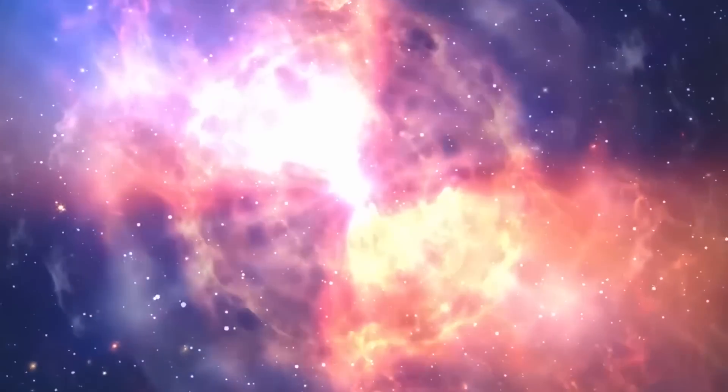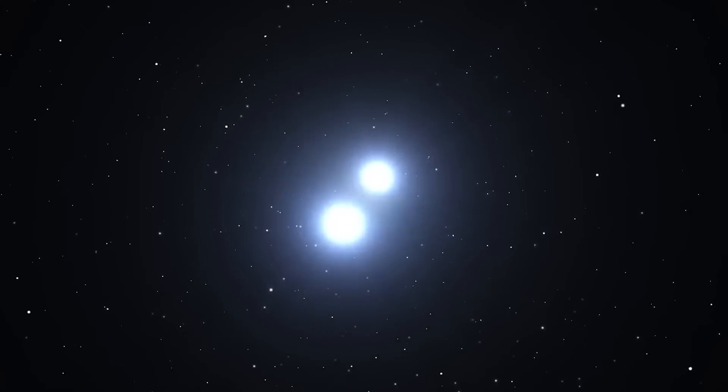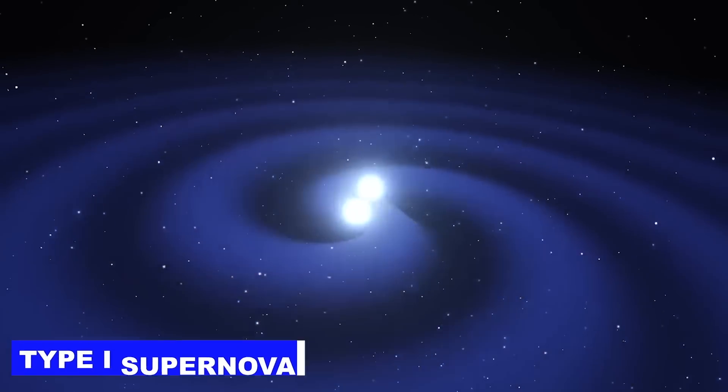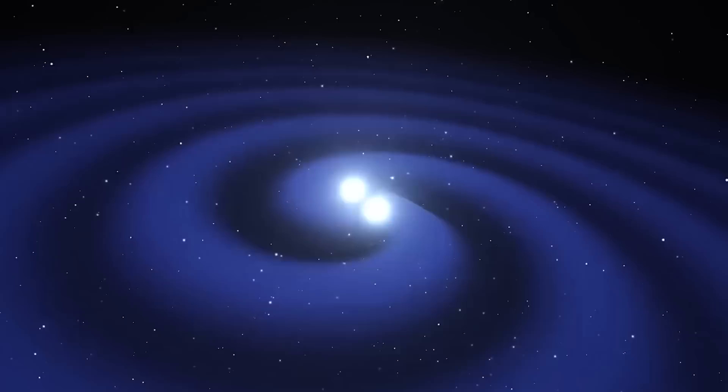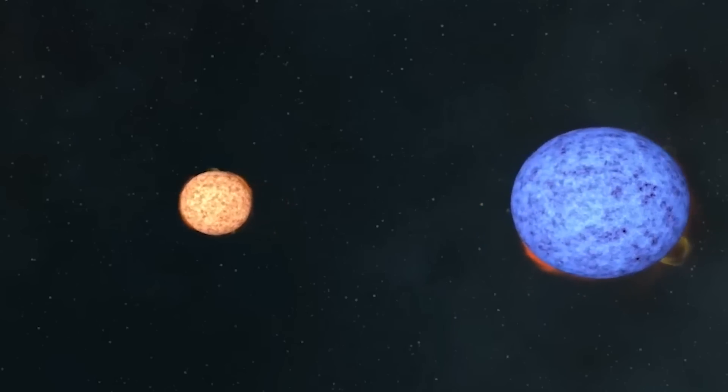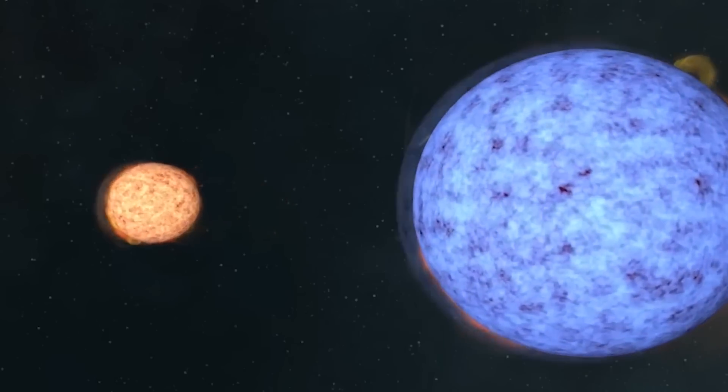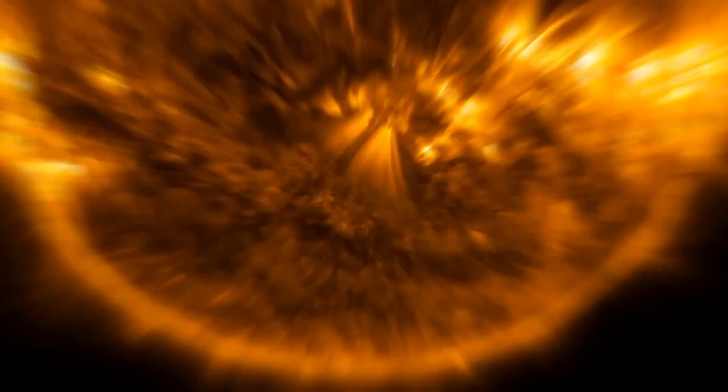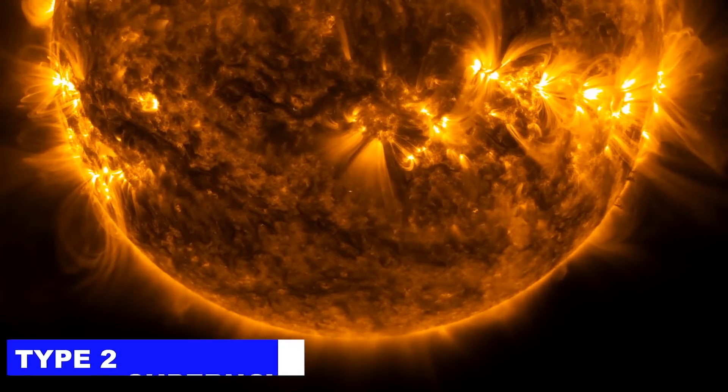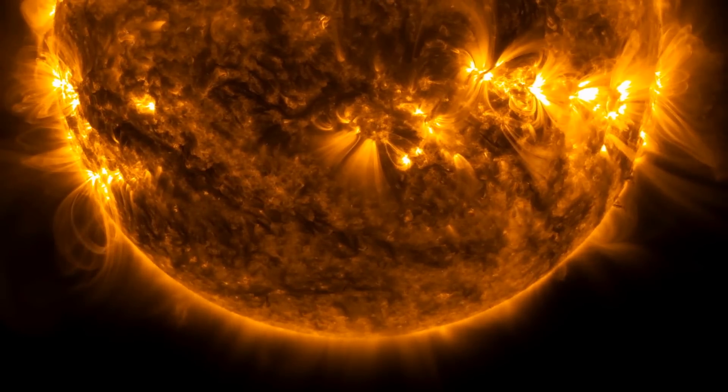There are two main categories of supernovae. The first, known as a type I supernova, occurs in a binary star system where a white dwarf accumulates too much mass from its companion, triggering an uncontrolled nuclear reaction. The second, a type II supernova, is what we expect Betelgeuse to undergo.